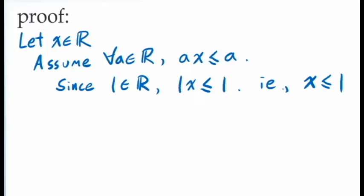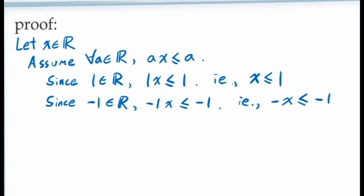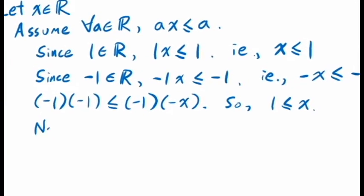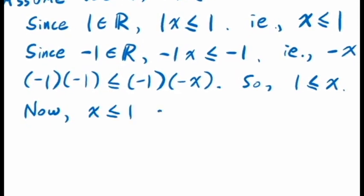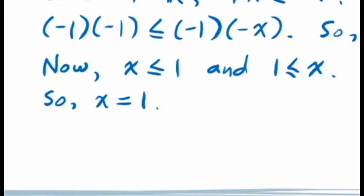We've only used the fact that our assumption is true for the number 1, but we know it's true for all real numbers. For example, we can also use the fact that it holds for negative 1. Since negative 1 is a real number, negative 1 times x must be less than or equal to negative 1, giving us −x ≤ −1. Multiplying both sides by −1 and switching the inequality direction gives 1 ≤ x. We now have x ≤ 1 and 1 ≤ x. By trichotomy, the only possibility is that x equals 1.